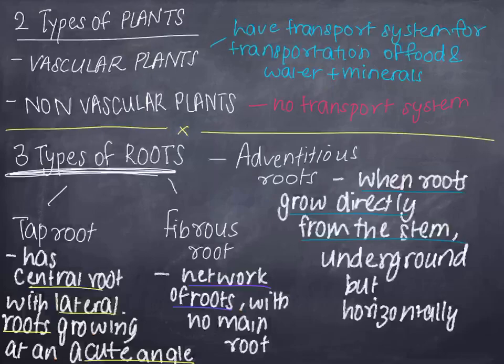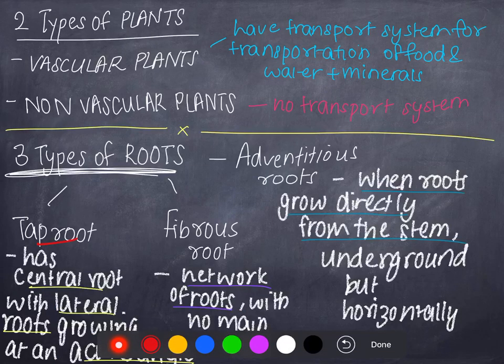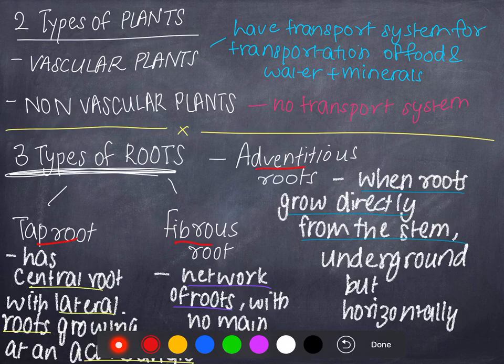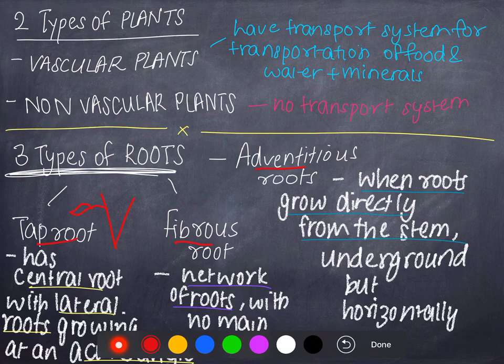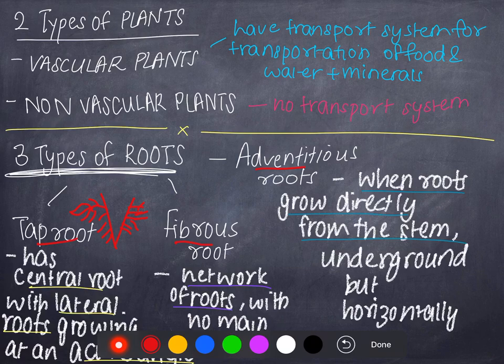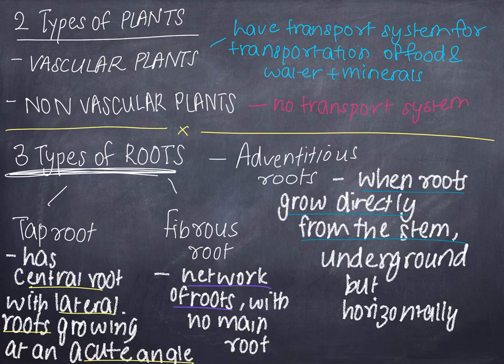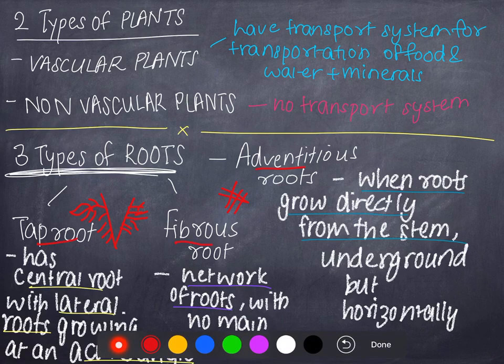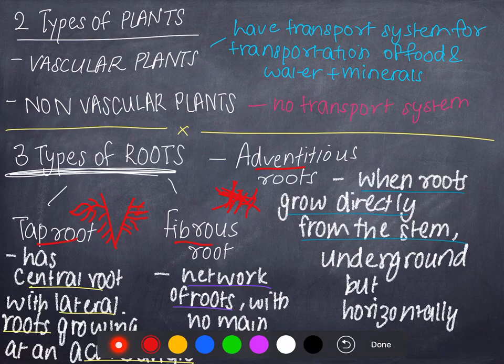There are three types of roots as well. There is a tap root, fibrous root, and adventitious root. Tap root has a central main root, and branching from the central root you have multiple smaller lateral roots growing at an acute angle. Fibrous root is just a network of roots. It does not have a main root.